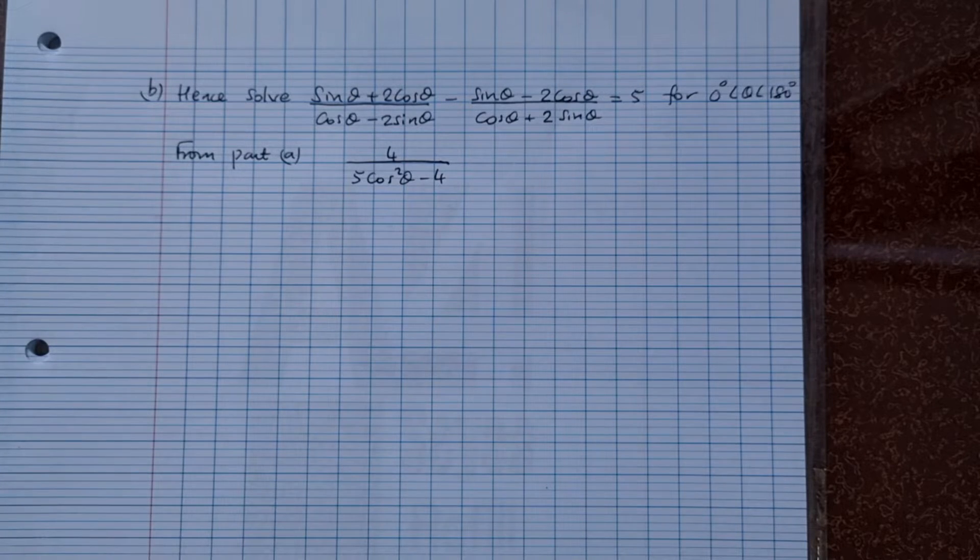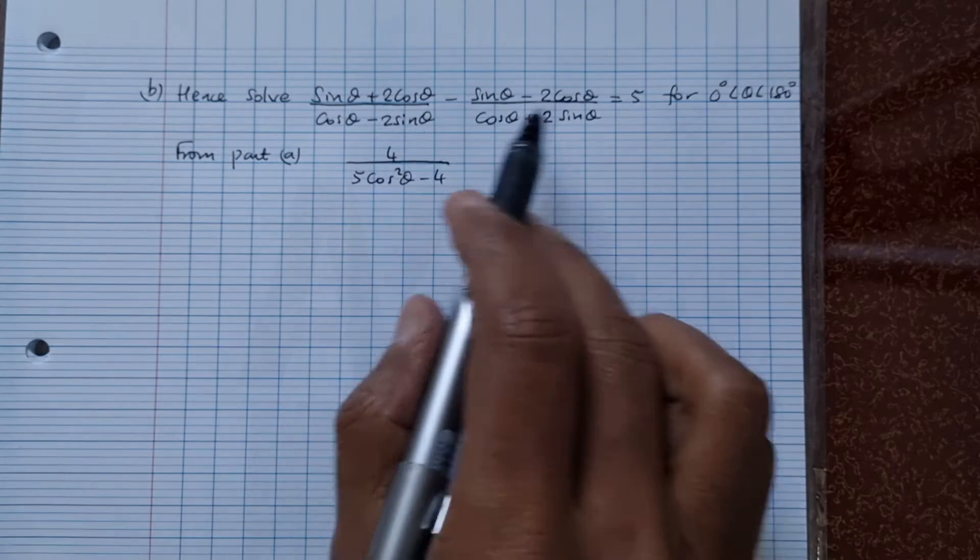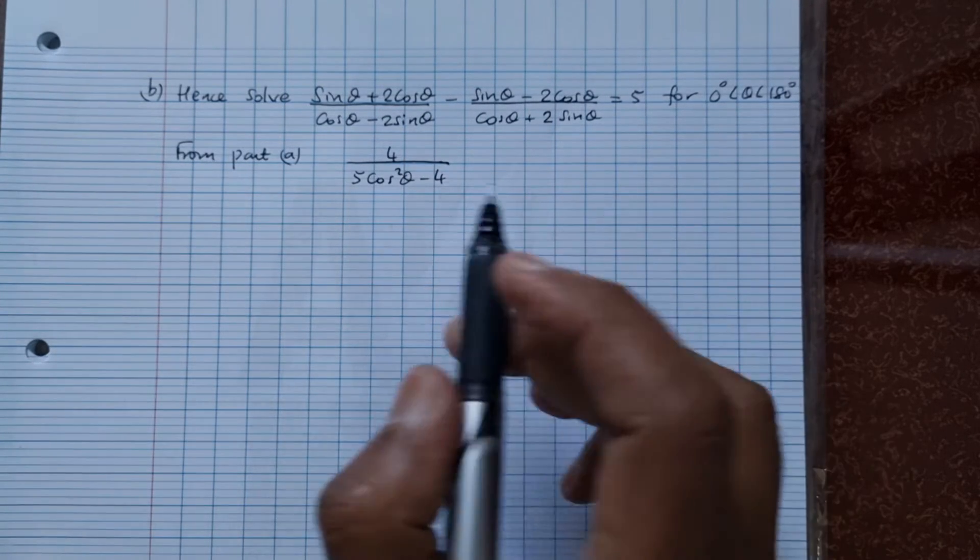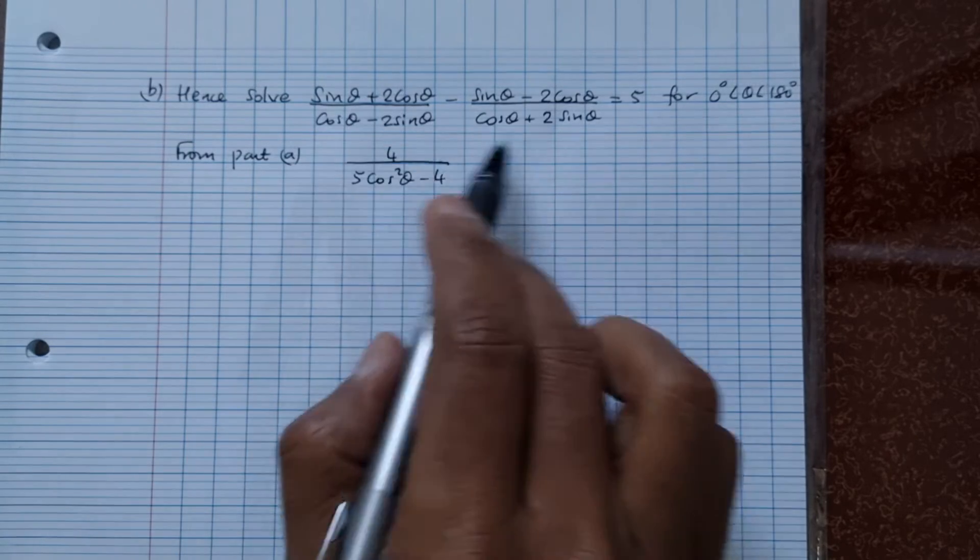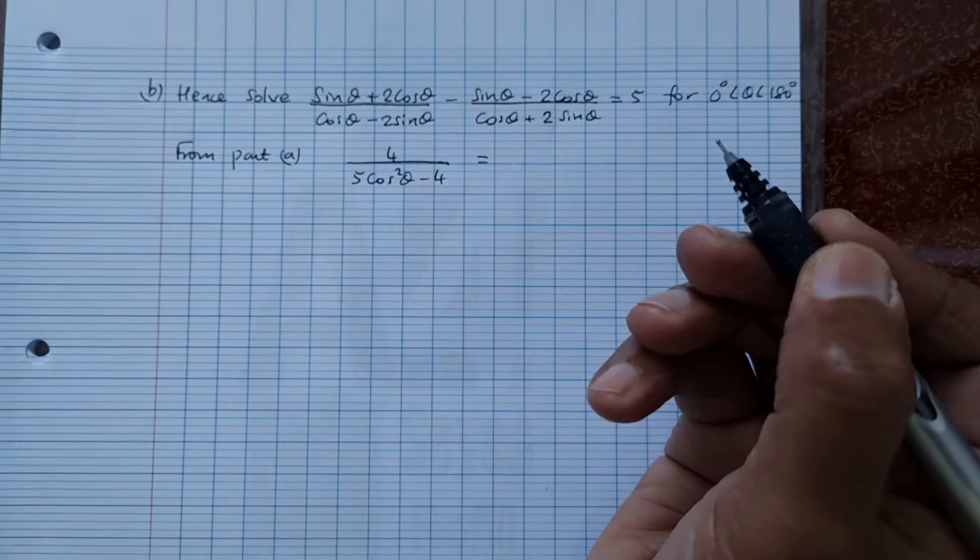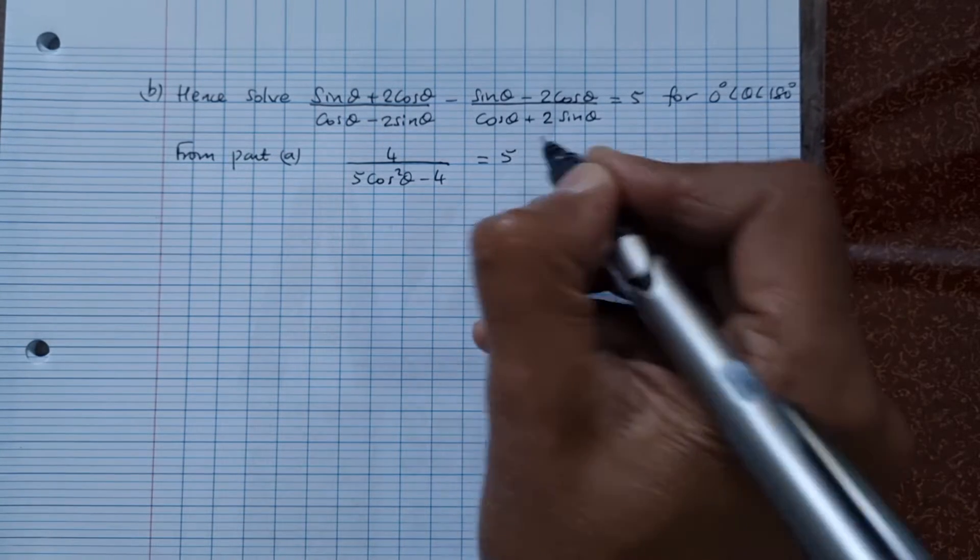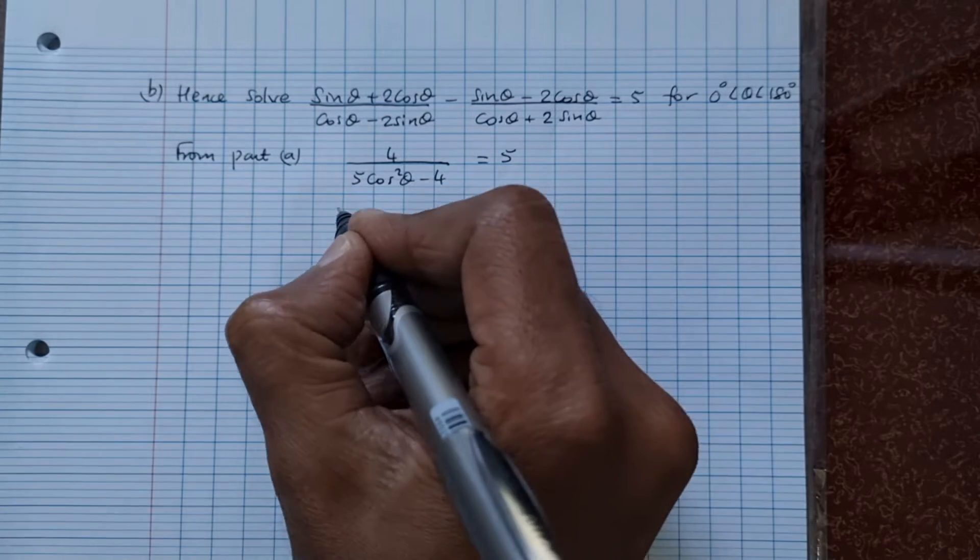Okay, for the second part of the question, we need to solve the whole equation. This here is equal to 5. Now, we know that from part A of the question, that whole expression is equal to all of that here: 4 over 5 cos²θ minus 4. This is going to equal to 5 now, so we equate it to 5, and then to cross multiply.